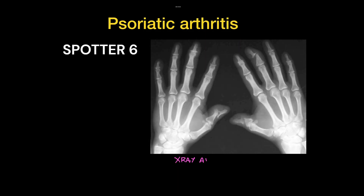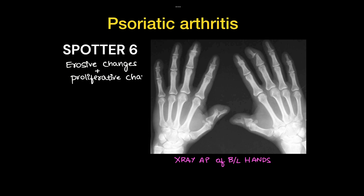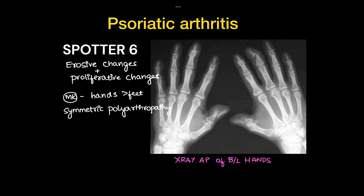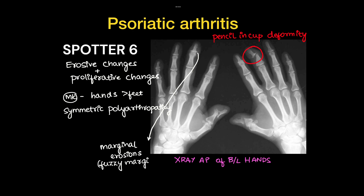This is a case of psoriatic arthritis on hand x-ray AP view. Psoriatic arthritis is an erosive arthritis which also shows proliferative changes along with erosive changes, most commonly affecting small joints of the hand more than the feet, presenting with symmetrical polyarthritis. Here you can see the classic pencil-in-cup deformity of the distal phalanx, and in this joint you can see marginal erosions with fuzzy margins — classical features of psoriatic arthritis.